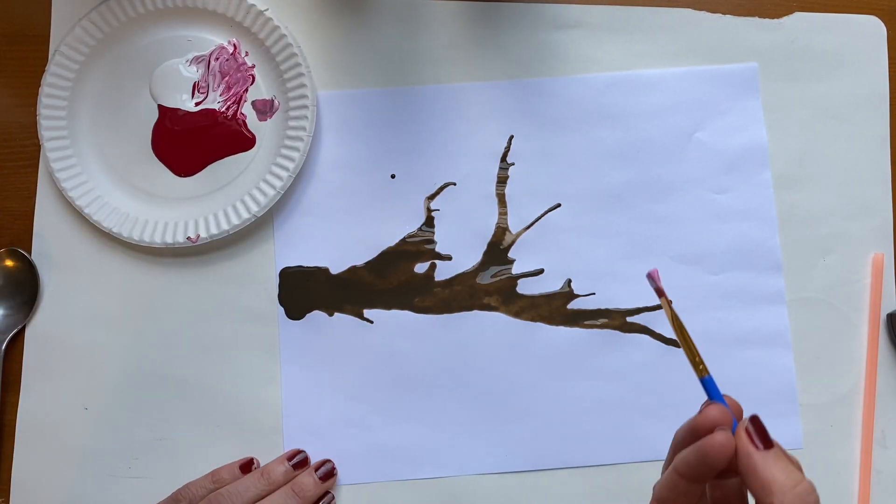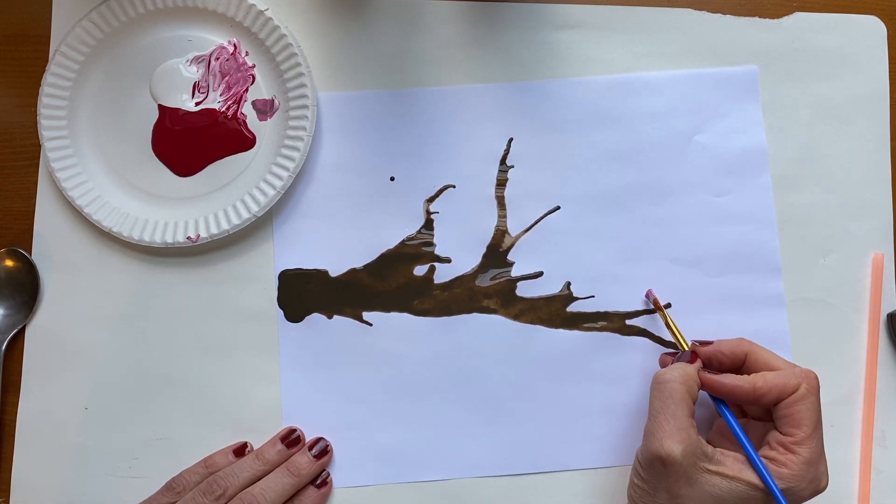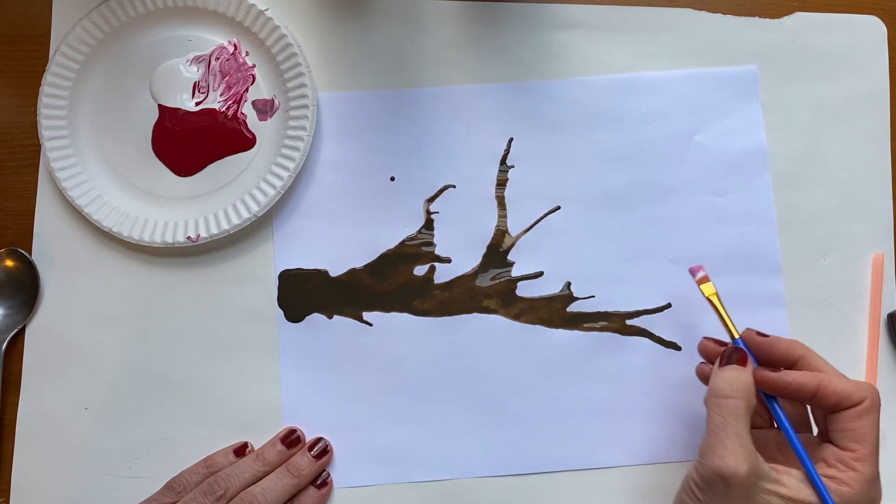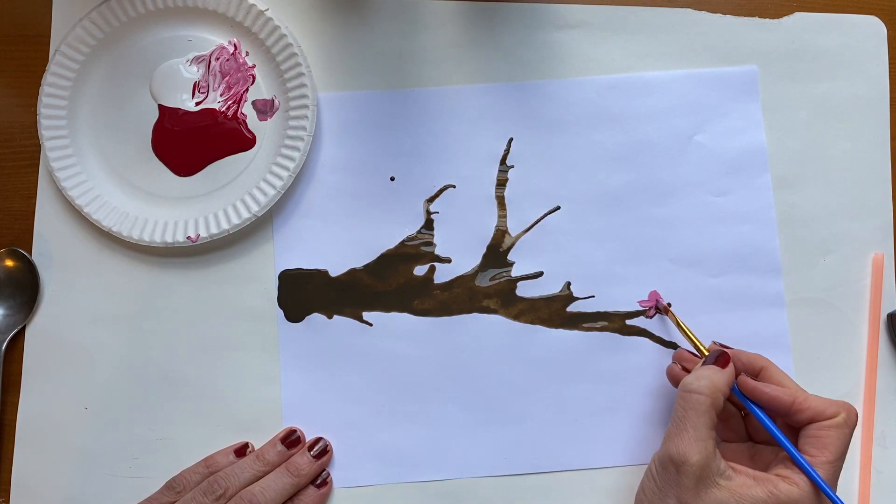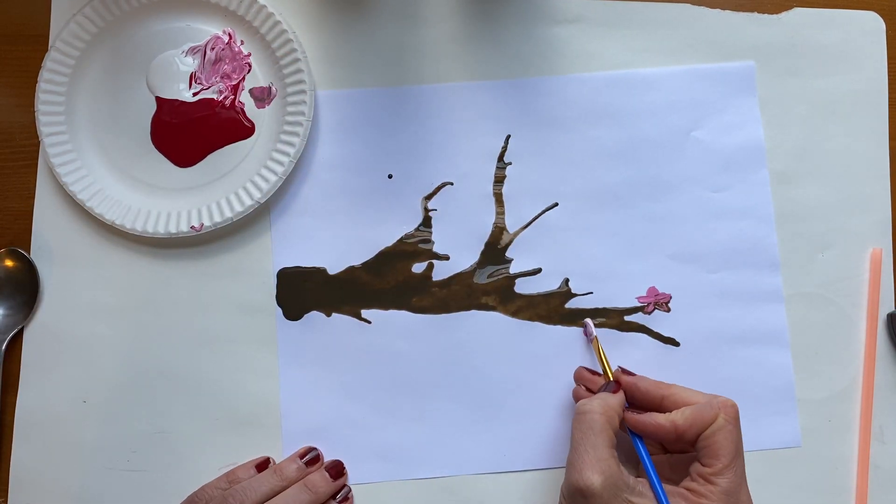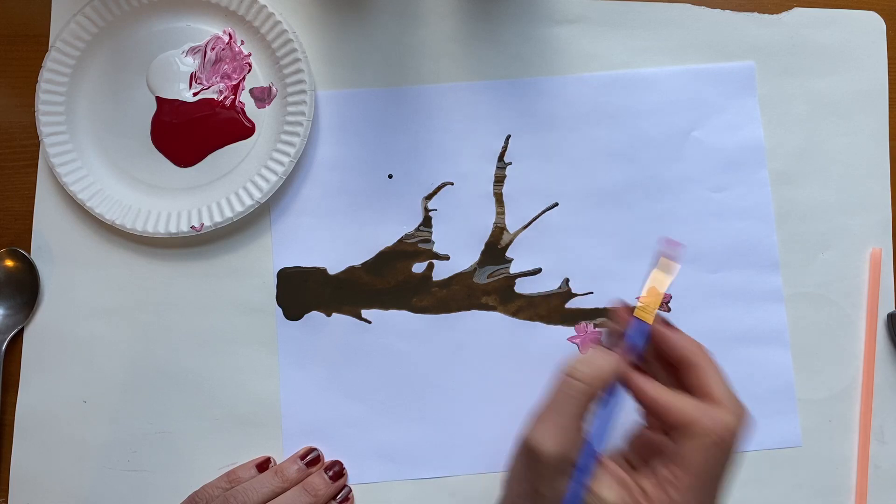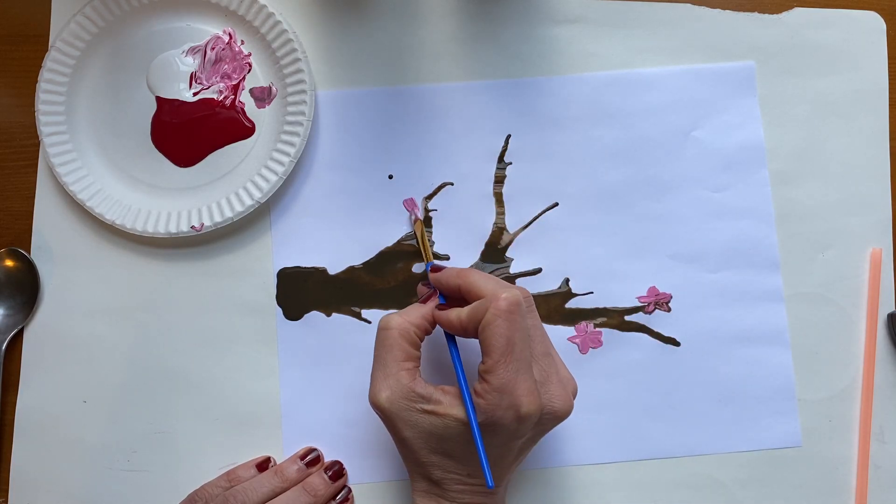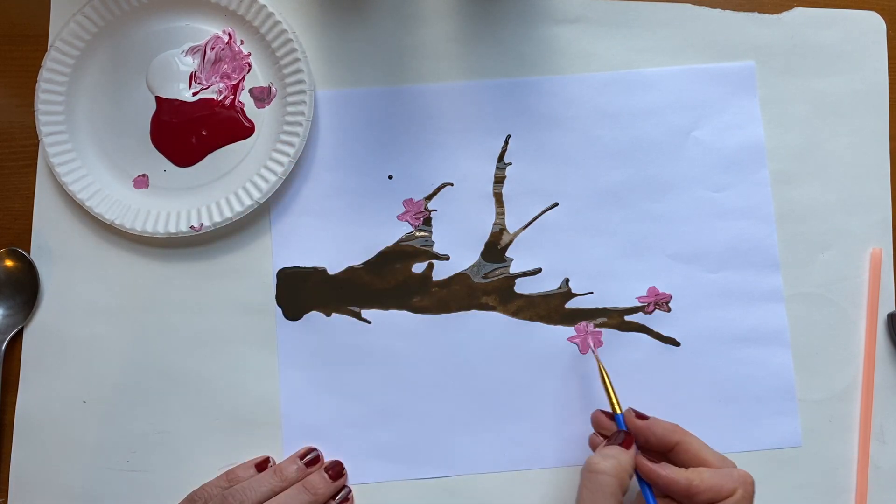Cherry blossoms have five petals. So after you have your branch, just go over it and start adding your flowers. You can add some leaves. Make the inside a little bit darker.